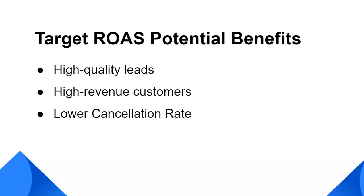Why should you even use target ROAS if your business works based on leads? If you use target ROAS instead of target CPA, your campaign will be optimized toward generating revenue and not necessarily leads. That way, there can be a higher chance of generating high-quality leads that will result in actual revenue for your business. Otherwise, using target CPA bidding strategy and simply optimizing toward leads might result in more low-quality leads and therefore a higher cancellation rate. But of course, it totally depends on the nature of your business, whether you should target leads or revenue as the primary objective in your campaigns.